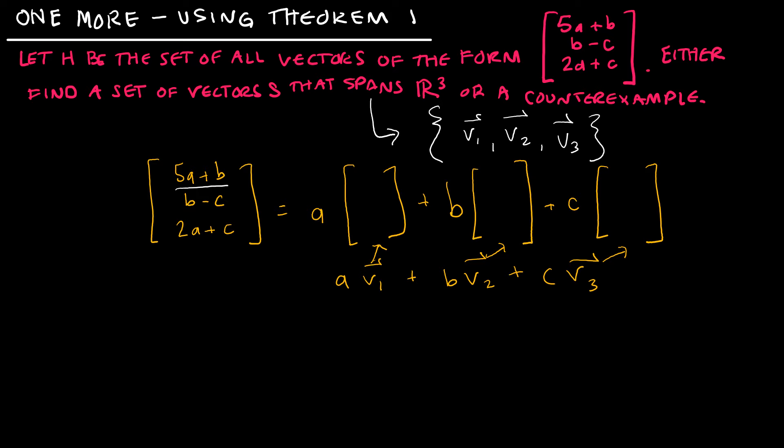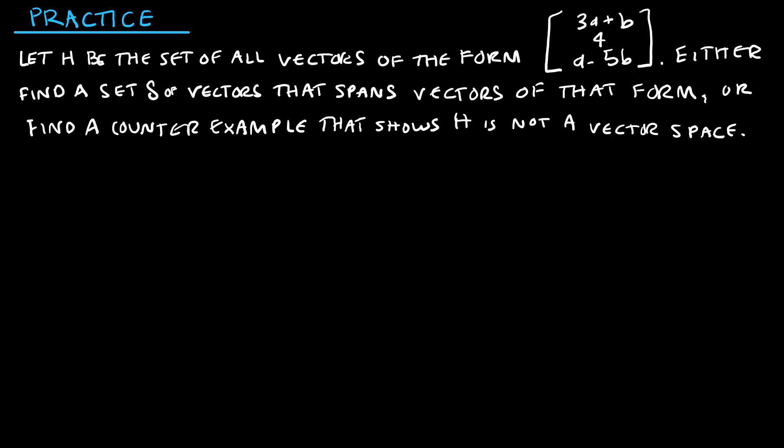How am I going to do this? Very straightforward. This is 5A plus B, so that's 5A plus 1B plus 0C. This is B minus C, so 0A, 1B, negative 1C. And then 2A plus C, so plus 0B plus 1C. And voila, I've found the set of vectors S to be {(5, 0, 2), (1, 1, 0), (0, -1, 1)}.